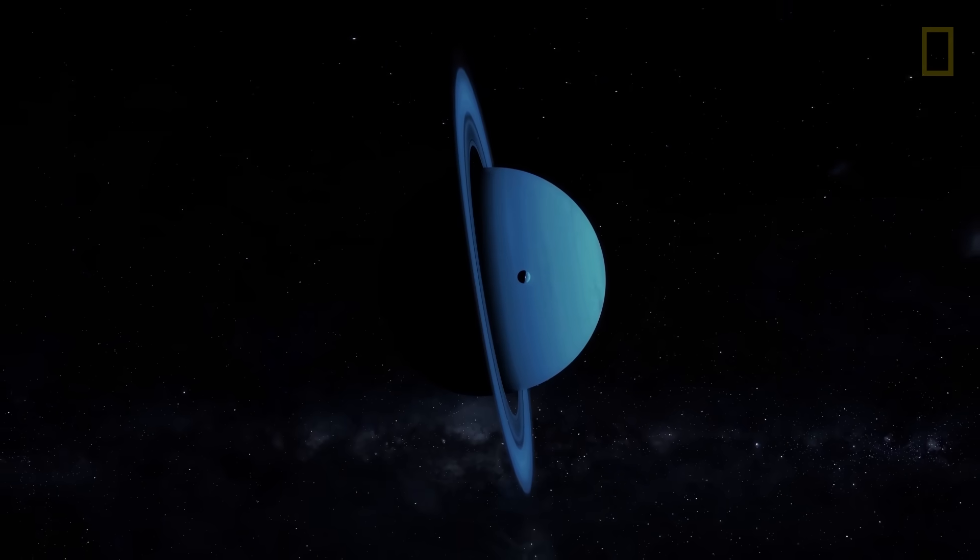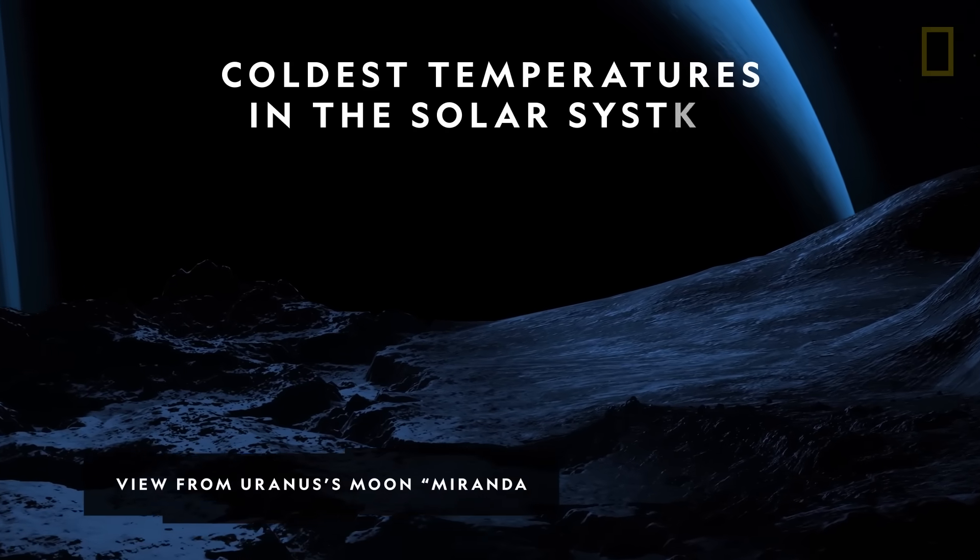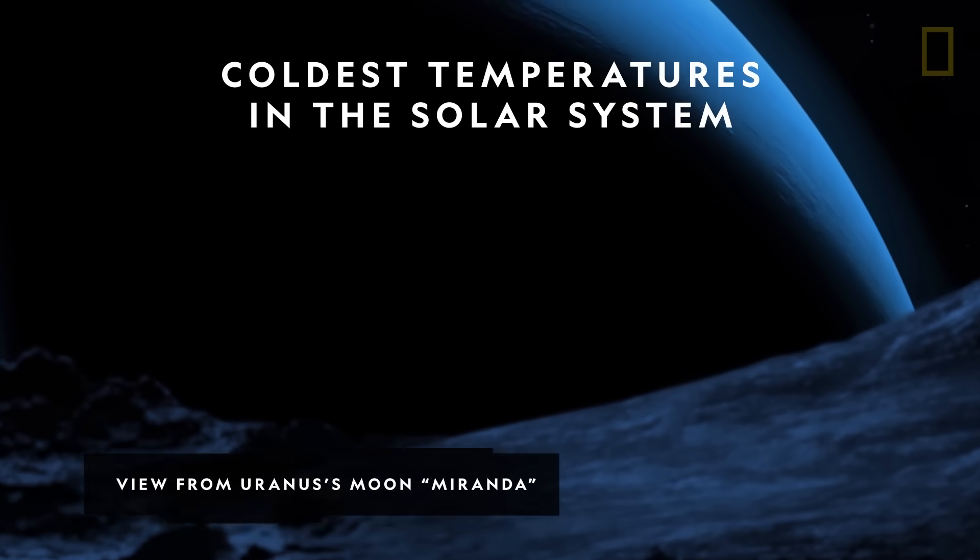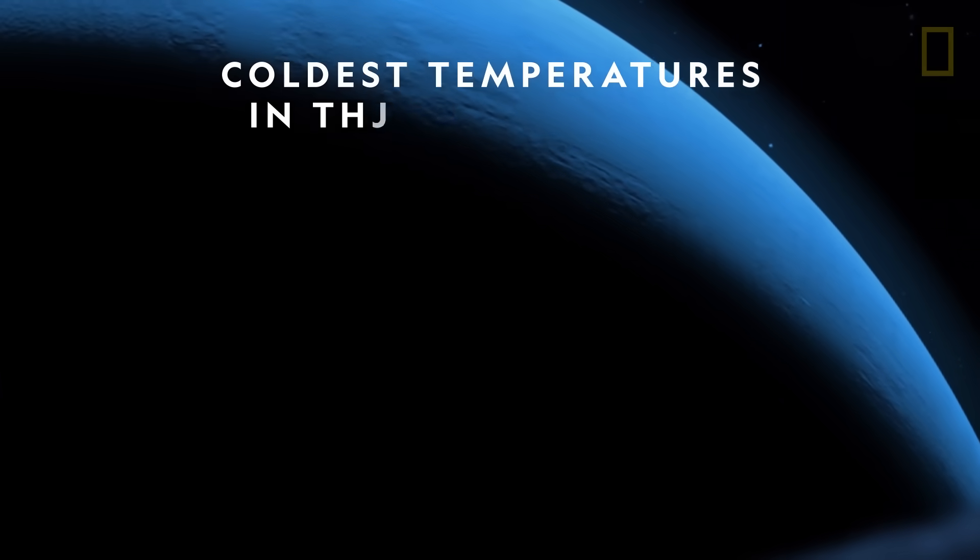Partially due to its distance from the Sun, Uranus boasts the coldest temperatures in the solar system. These icy temperatures, dropping as low as negative 370 degrees Fahrenheit, are largely influenced by the planet's composition.